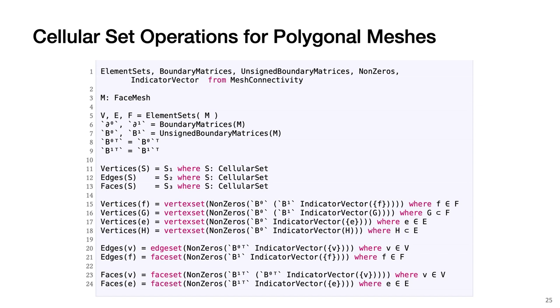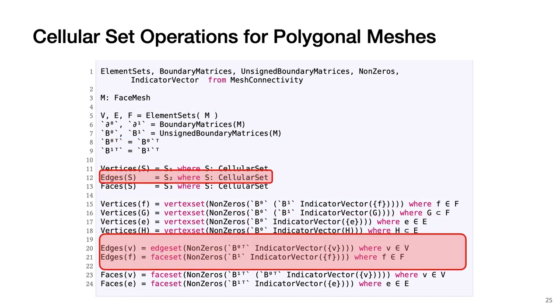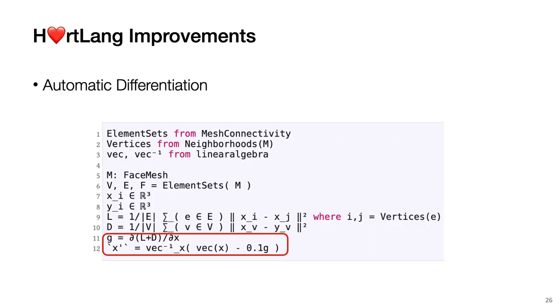The following hotline code defines the cellular set operations for a polygonal mesh. Lines 5 to 7 show the low-level representations these basic operations make use of. We defined several overloading functions such as vertices, edges, and faces. We substantially enhanced hotline with functionality to support a variety of practical mesh processing applications, including support for taking first and second derivatives of expressions.